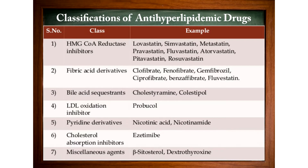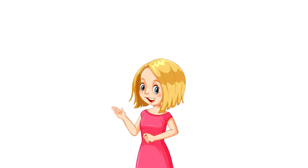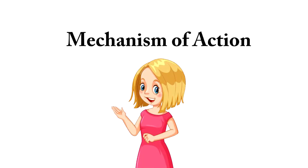Fibric acid derivatives include Clofibrate and Fenofibrate. Bile acid sequestrants include Cholestyramine and Colestipol. LDL Oxidation Inhibitors include Probucol. Pyridine derivatives include Nicotinic Acid and Nicotinamide. Cholesterol absorption inhibitors include Ezetimibe. Miscellaneous agents include beta-sitosterol and dextrothyroxine.